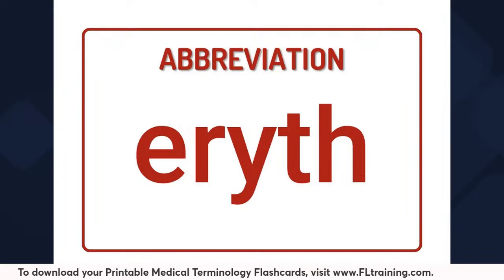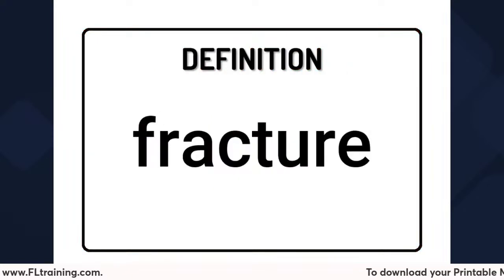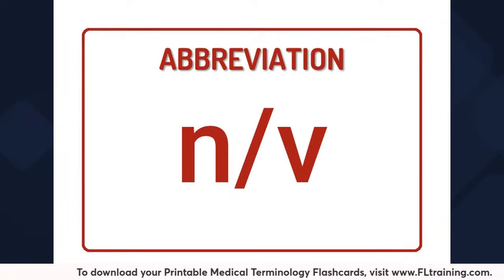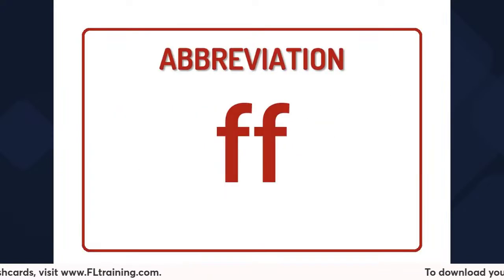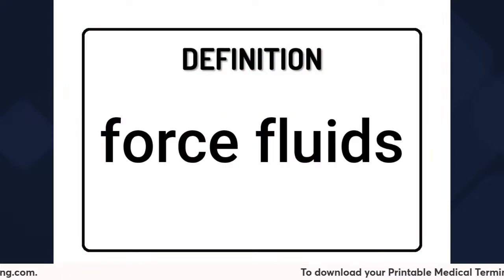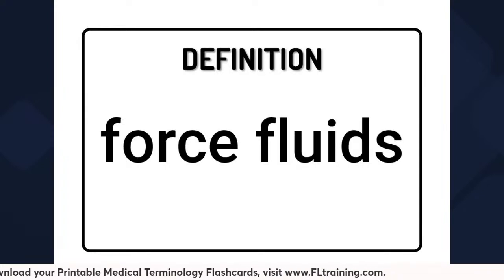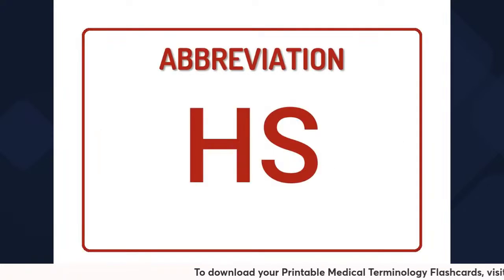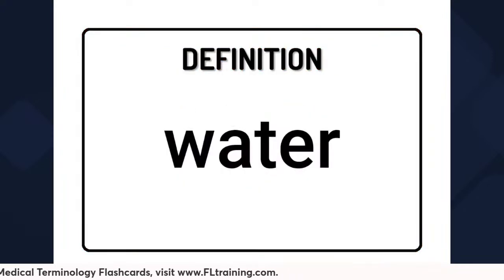ERIF refers to a color — it means red. F-X is fracture. N-V means nausea and vomiting. F-F is the medical abbreviation for forced fluids — forced fluids are indicated if a patient is suffering from dehydration. H-S is hour of sleep, or bedtime. H-2-O is water.